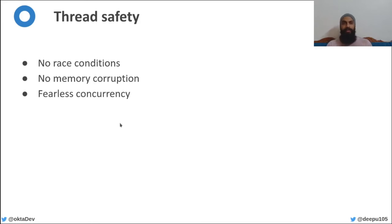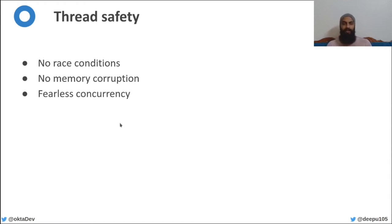Finally, there is thread safety. In a thread safe language, you can access or modify the same memory from multiple threads at the same time without worrying about data races. This is generally achieved by using mutual exclusion locks or thread synchronization. Thread safety is required for optimal memory and type safety, so languages that are memory and type safe tend to be thread safe as well.